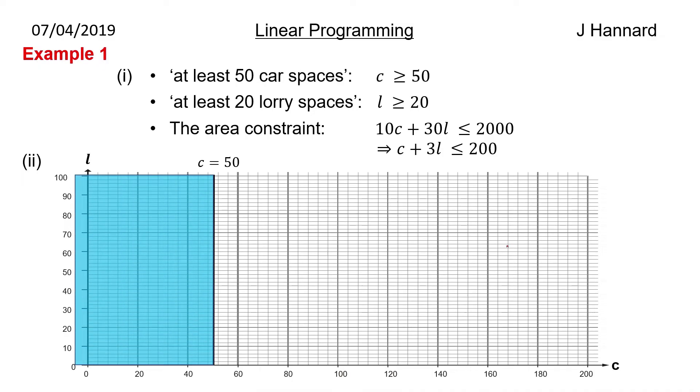Then we draw a line through l equals 20 on the l-axis. And we say, well we want to be greater than 20. So we shade beneath it. Like that.